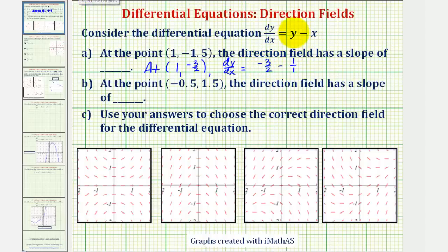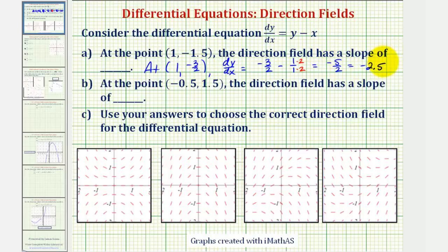So we obtain a common denominator of two. We would have -3/2 minus 2/2, or -5/2, which we can also write as -2.5. So at this point, the direction field would have a slope of -5/2, or -2.5.